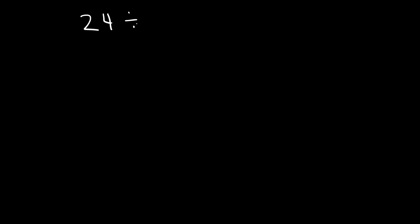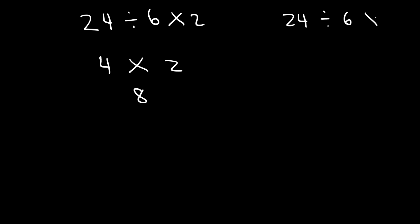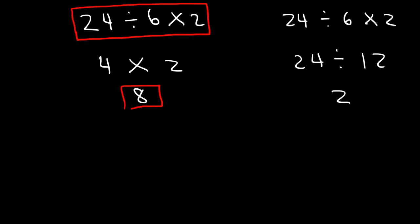Now let's move on to our next example. What is 24 divided by 6 multiplied by 2? Should we divide before we multiply, or multiply first then divide? Let's do it both ways. Dividing first: 24 divided by 6 is 4, and 4 times 2 is 8. Multiplying first: 6 times 2 is 12, and 24 divided by 12 is 2. We get different answers, so the order matters. If you type this expression in your calculator exactly as written, it will give you 8. Multiplication and division have the same priority, so the best thing to do is simply perform the operation from left to right.